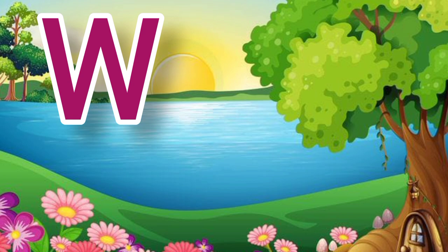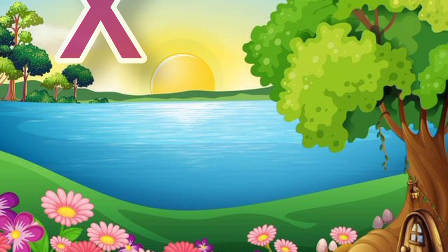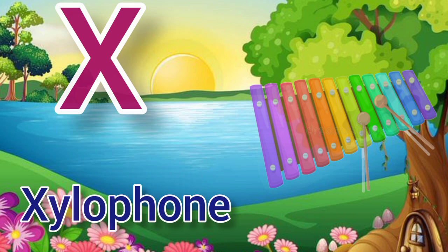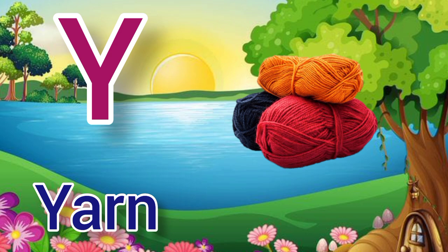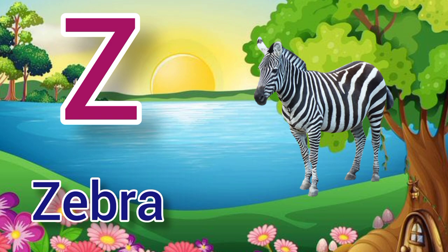W for watermelon, watermelon means tarbooj. X for xylophone, xylophone means xylophone. Y for yarn, yarn means dhaga. Z for zebra, zebra means chithadhar ghoda. Thanks for watching, please like, share and subscribe to my channel.